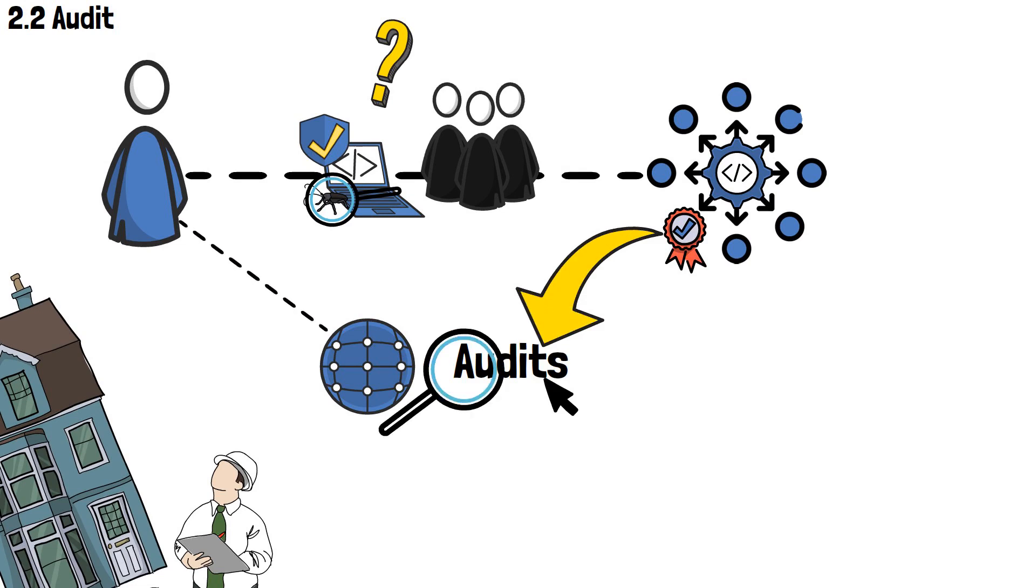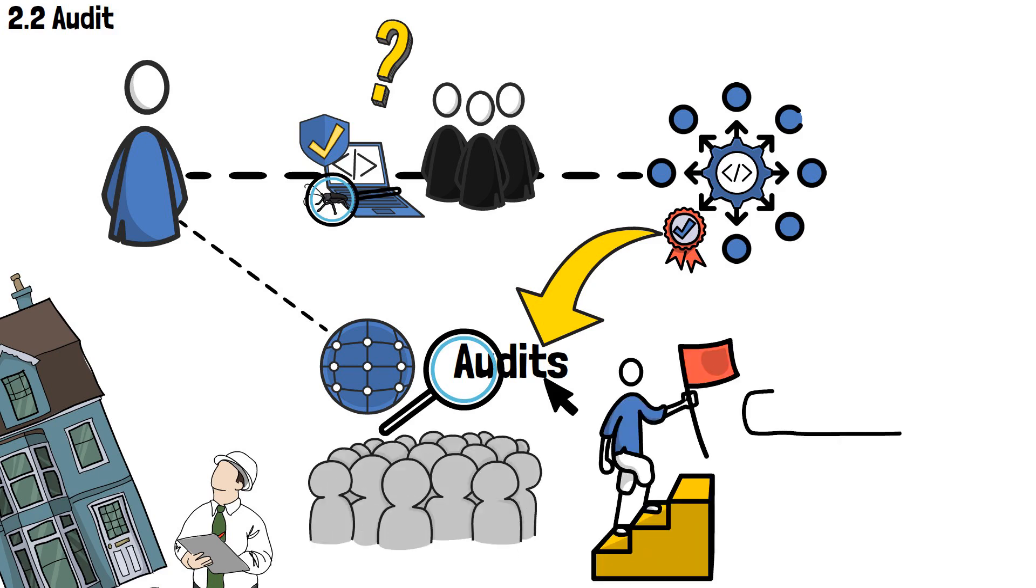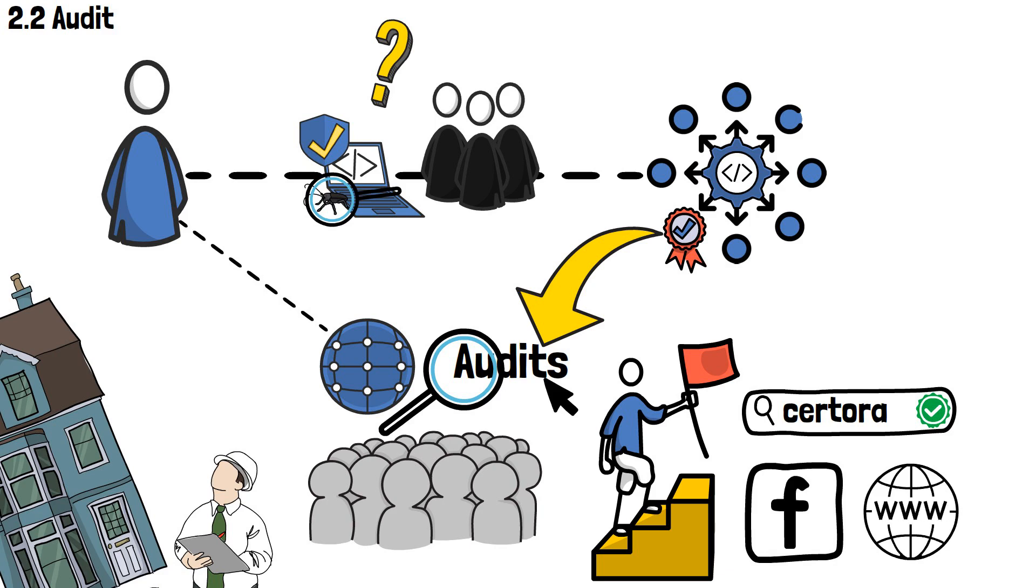Now, after having checked that a particular dApp has made their audit information public, you can take an extra step. Search up the names of the audit companies, see whether they actually exist. You can tell that by looking up their social media platforms and checking out their official websites.